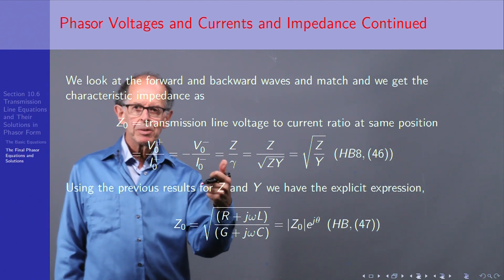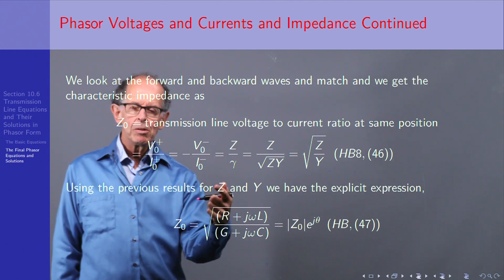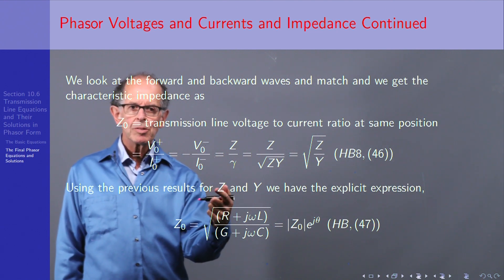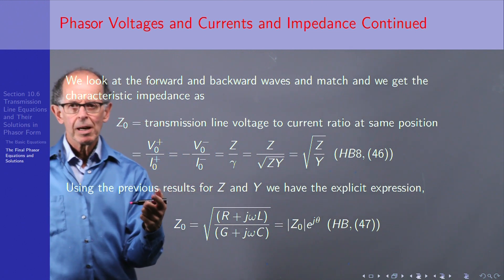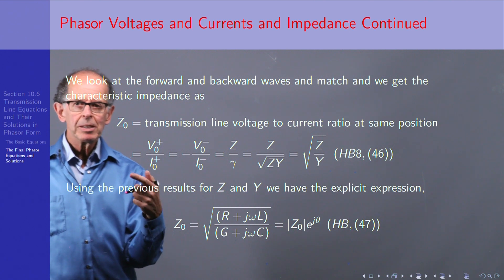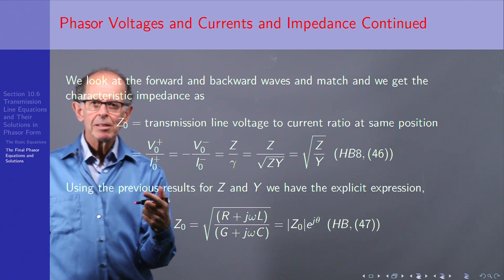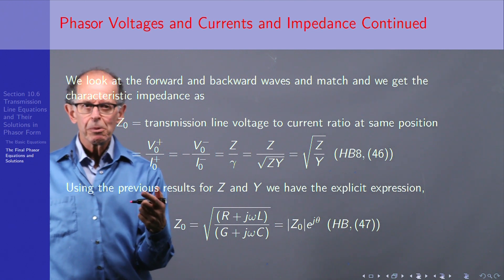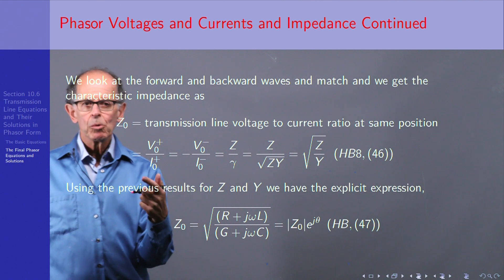So now we know γ, we know the propagation, we know the frequency, we know the characteristic impedance, and that means we know everything about the transmission line to do some calculations. And now we can go forward, look at some approximations, calculate power, that's really important, that goes down the transmission line, and then we'll go to applications.